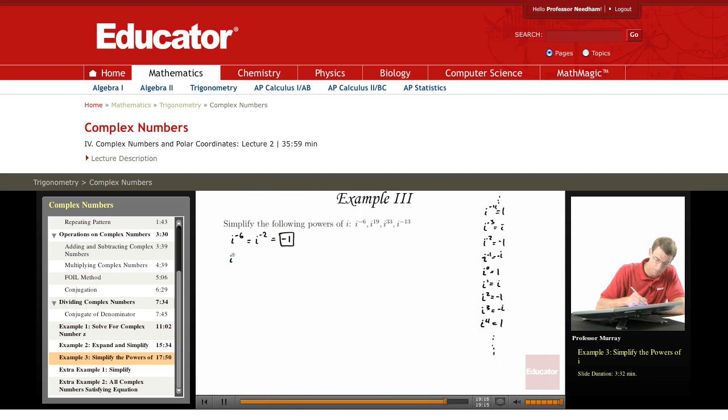i to the 19th, now if you're counting by 4s, you got 4, 8, 12, 16, and then 3 more to get to 19, the remainder is 3, so that's the same as i cubed, because essentially what we did was we went down by 4 at a time, and i cubed, I remember from my pattern over here is negative i.